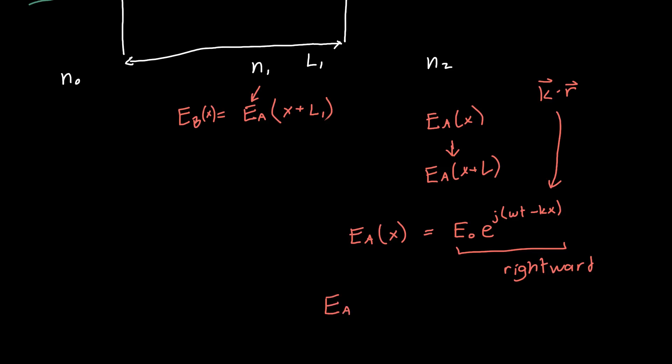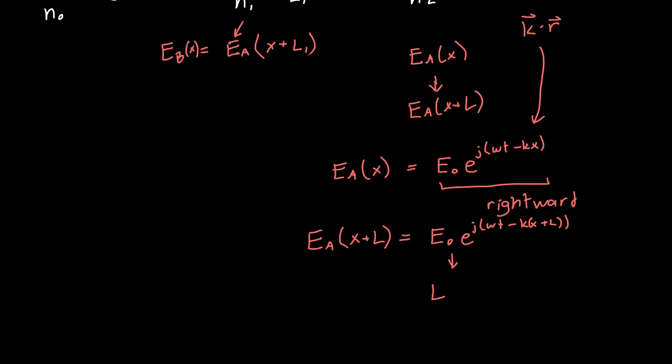It's just some amplitude, and the amplitude can be complex, times E to the J omega T minus KX. This is for a rightward traveling plane wave. If it's traveling in some general direction K or K dot R, that's okay because we're only worried about the X component. This is just math. We just plug in X plus L, and that's equal to E naught times E to the J omega T minus K times X plus L.